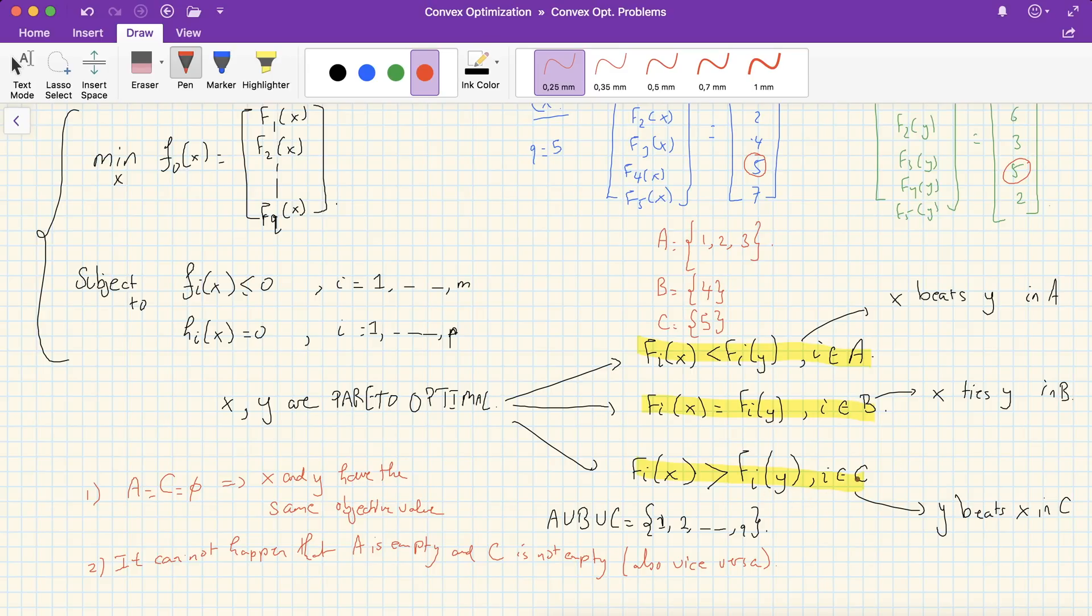So there is a kind of trade-off analysis here or trade-off choices to make. You can't expect to beat another Pareto optimal point in all the objective values. So the question here is, how bad are you willing to sacrifice or to trade off x for y, or vice versa?